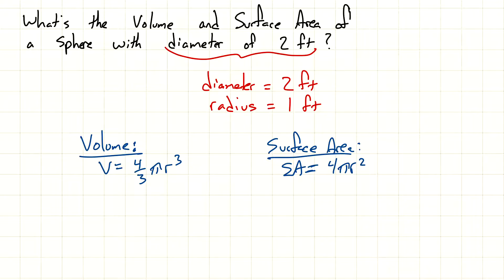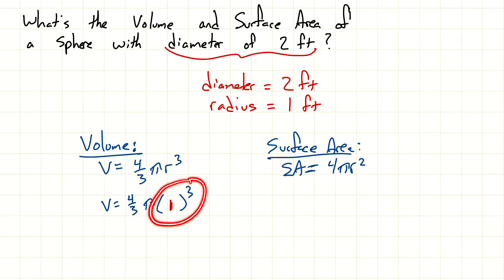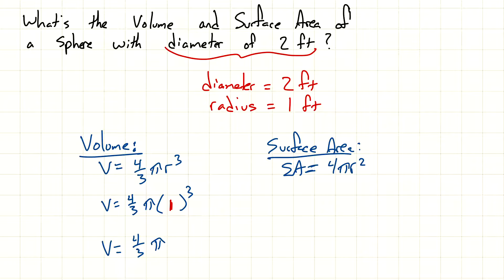Let's see if you got this correct. Plugging in: four-thirds times pi times one cubed. If you know anything about one — one times anything gives you one — so it doesn't matter what the exponent is. We're still left with a final answer of four-thirds pi feet cubed. These are feet, not inches, so if you put wrong units, that's wrong. Make sure you pay attention to units.